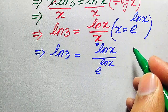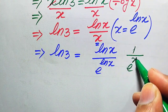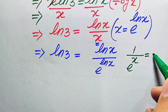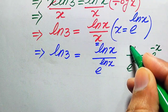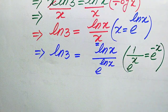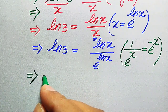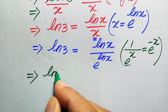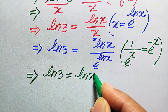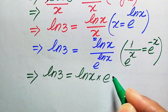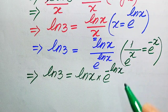We use the property that 1/e^x = e^(-x). So when we move e^(logX) to the top, it becomes log(3) = log(X)·e^(-logX).